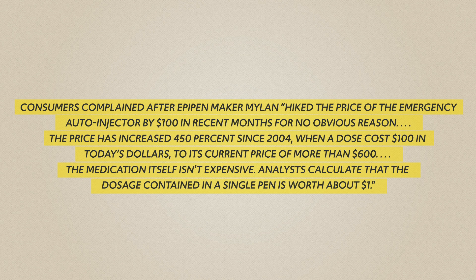The scenario is simple: a company called Mylan, who makes EpiPen — a life-saving emergency auto injector — has increased the price 450% in a few years for no obvious reason. Consumers are complaining because they feel taken advantage of. People who need to carry EpiPen to save their life can't stop buying them, so they're forced to pay far more than the medicine is worth. Now let's look at the questions and see what they're asking us to do with this scenario.